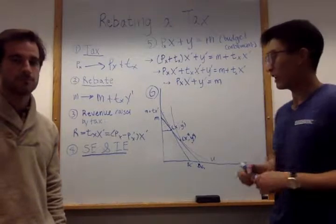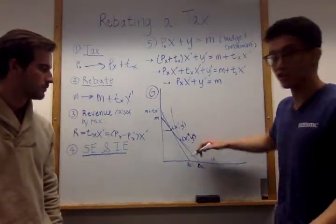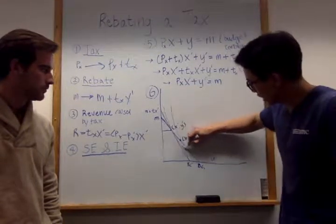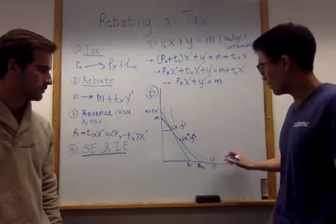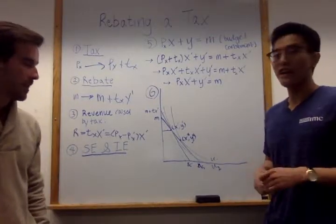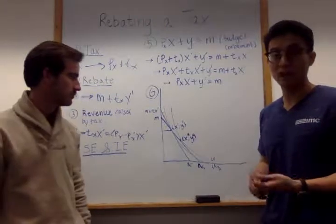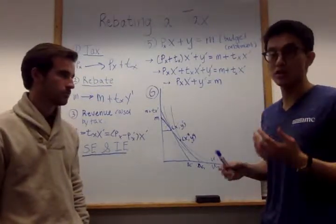With the tax rebate plan, however, after choosing this new optimal bundle under the new budget constraint line, we will get another indifference curve that will denote another utility level, one that is lower than the previous utility level. And therefore, because the utility level goes down, their purchasing power goes down, and that's why the consumer is worse off.